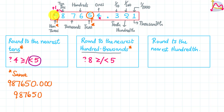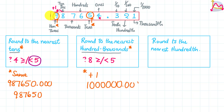Our hundred thousands digit increases by one — going from nine to ten — which causes a carry. All other digits become zero, and because we get ten in the hundred thousands place, our overall number moves into the millions. The result is 1,000,000.000, or simply one million. This is how we round to the nearest hundred thousands when the leading digit is nine and the following digit is greater than or equal to five.